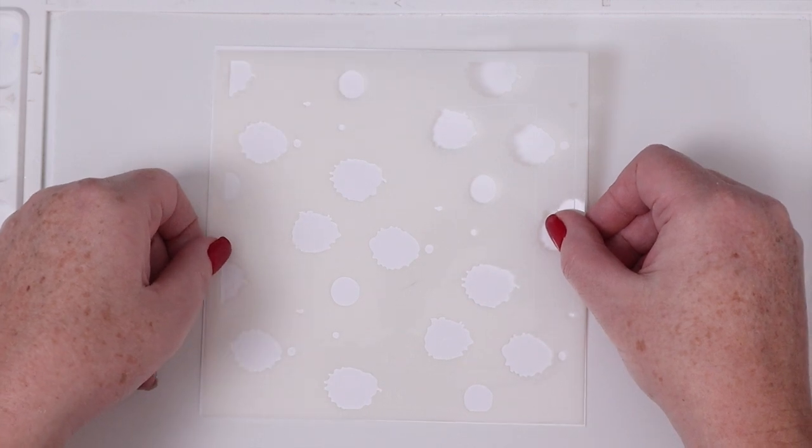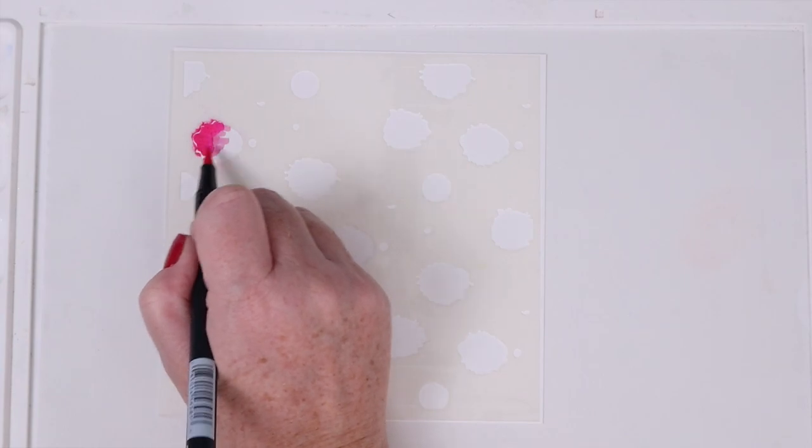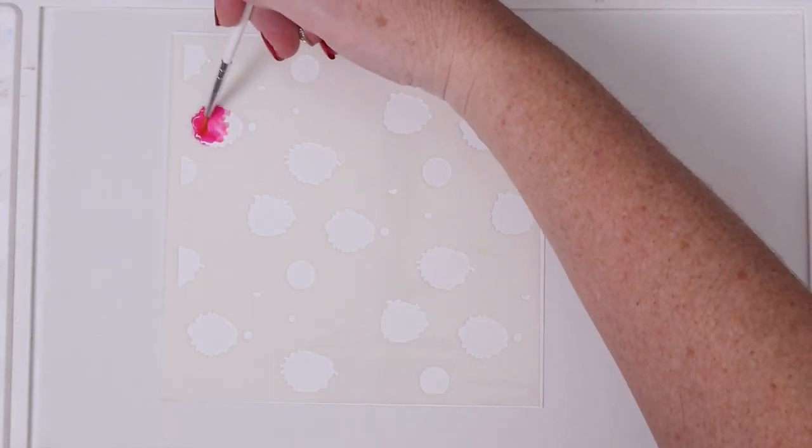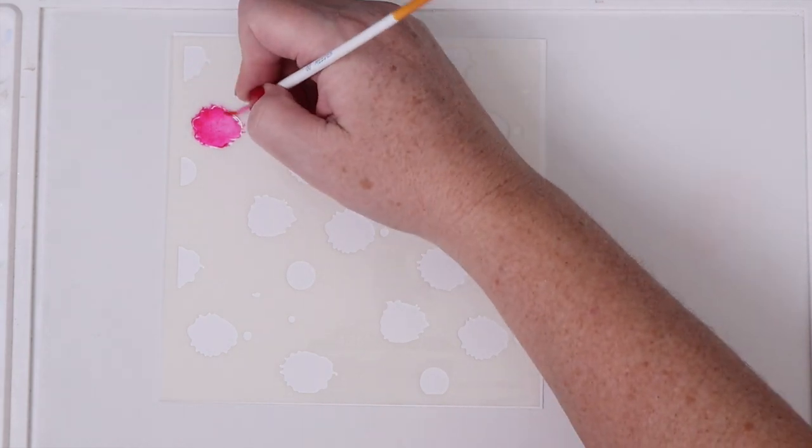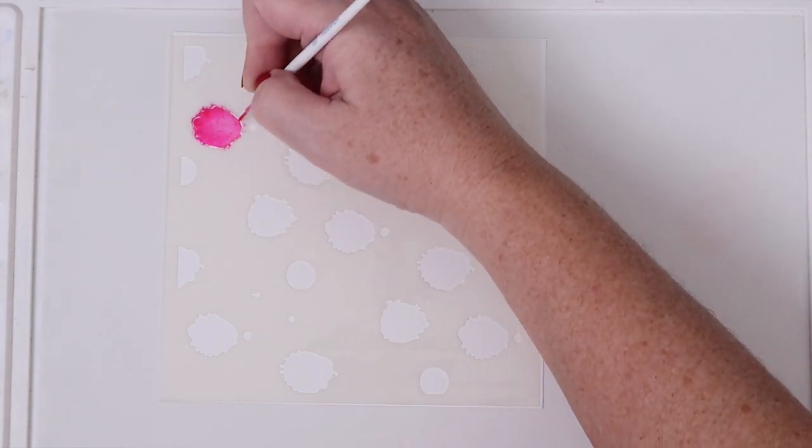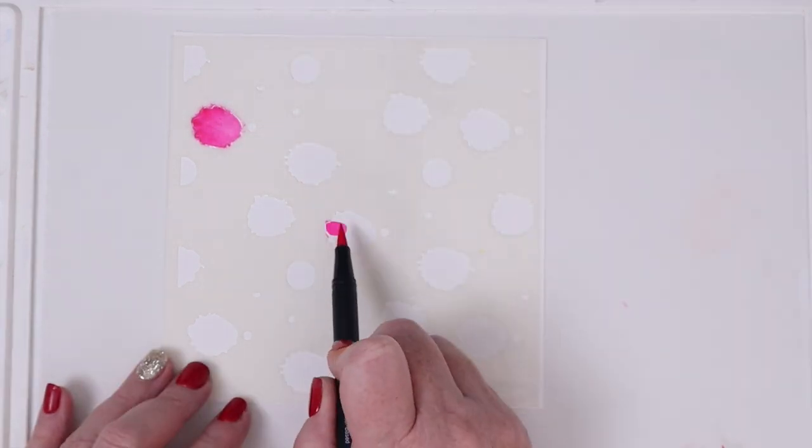I'm using the Waffle Flower Palette Paper to protect my mat from staining by the Tombow markers I'm going to use. I sprayed the back of the stencil with Pixie Spray over the palette paper, then laid down a six by six piece of Canson Bristol smooth cardstock and placed the stencil on top of the cardstock.